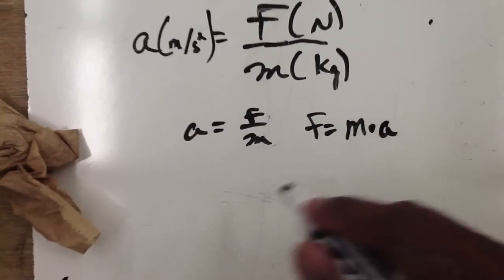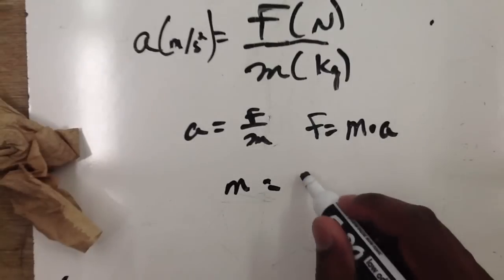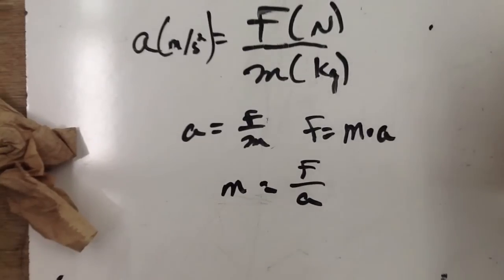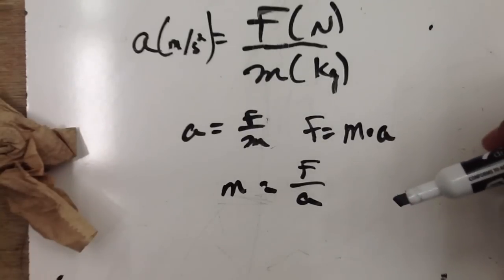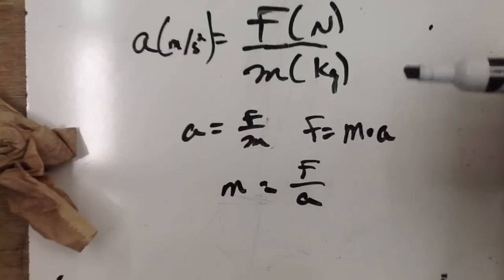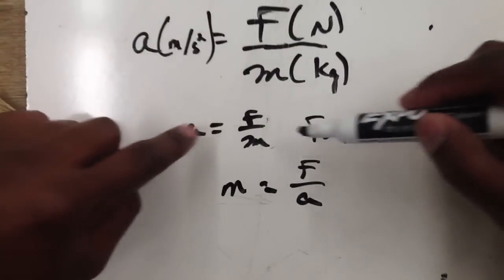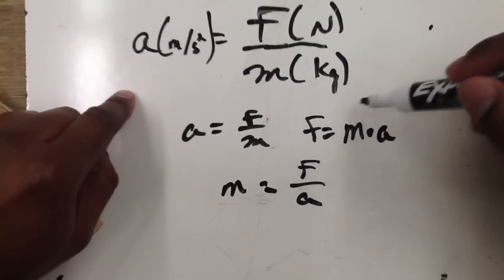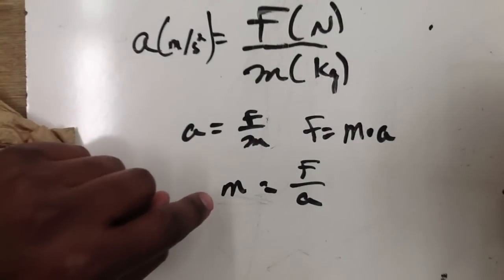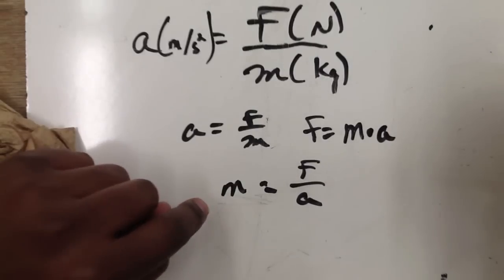If we wanted to write it in terms of m, we'd say m is equal to F divided by a. Just be aware that this is all the same equation, so you'll just need to rearrange depending on what you're solving for. Solving for acceleration: a = F/m. Solving for force: F = m × a. For mass: m = F/a.